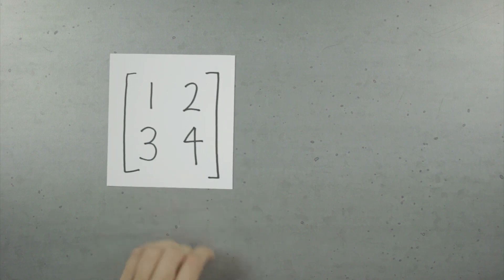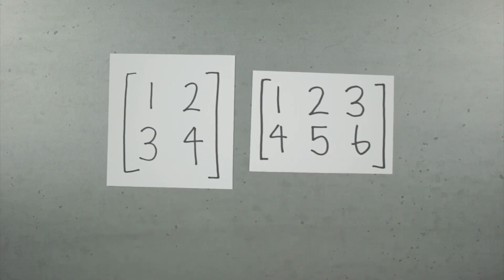When it comes to matrix multiplication, not all matrices can even be multiplied together in the first place. In order to be able to multiply two matrices, you need the first matrix to have the same number of columns as the number of rows in the second matrix.